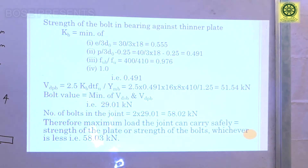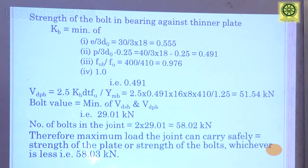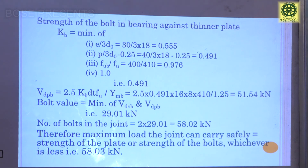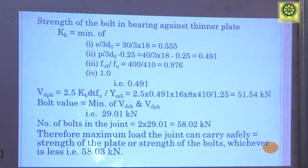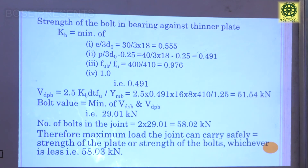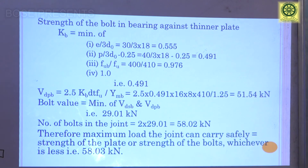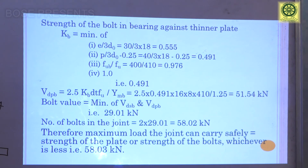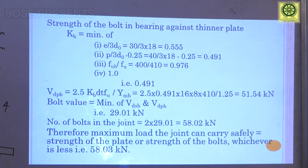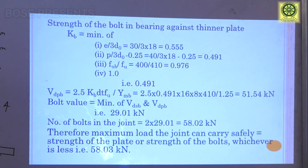The maximum load the joint can carry safely is the minimum of the bolt strength and the plate strength. Bolt strength = 58.02 kN; plate strength = 149.54 kN. Therefore the strength of the joint = 58.02 kN. Thank you for your patience in listening.